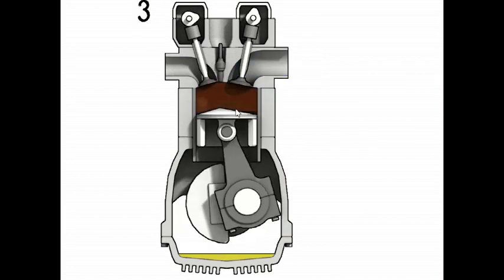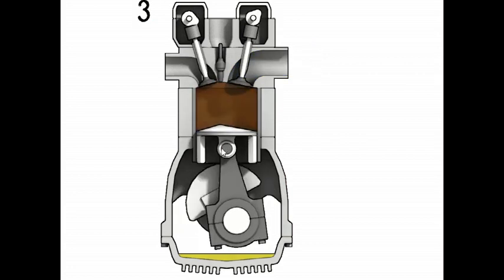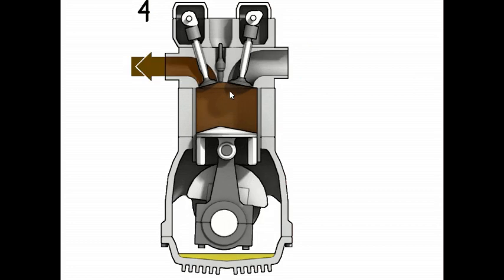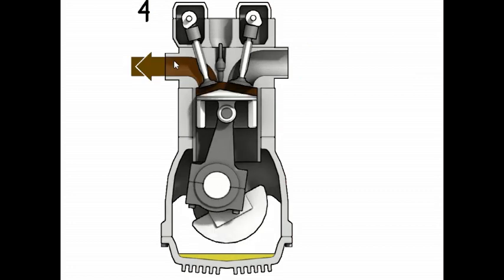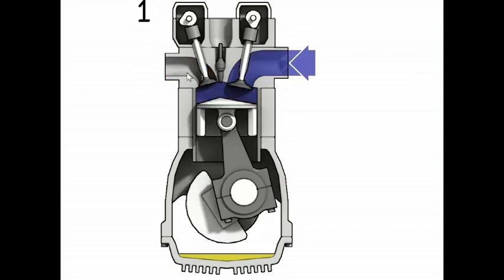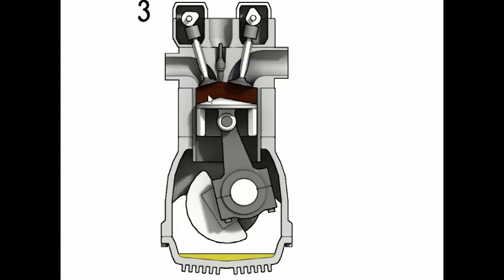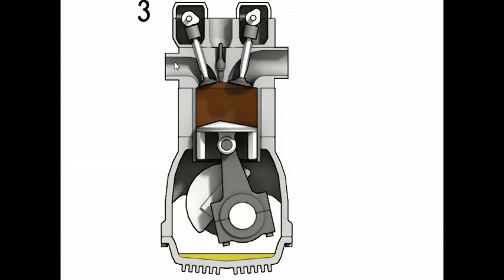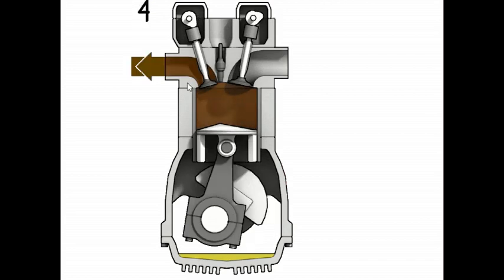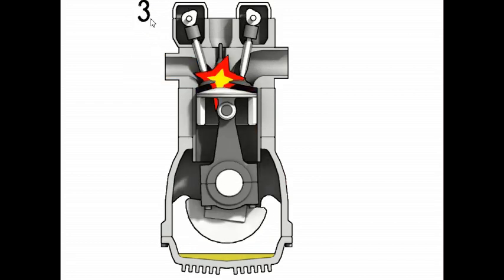After the expansion, the piston moves upward again. During the fourth stroke, the burnt gases or combustion products sweep out from the exhaust wall. So these four processes represent the four strokes of the working of the internal combustion engine.